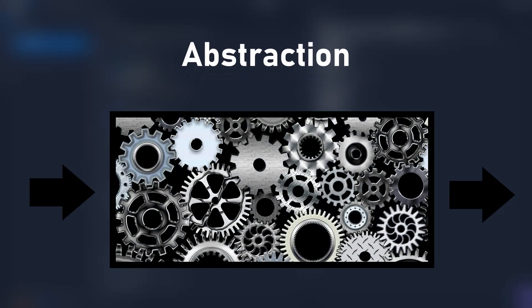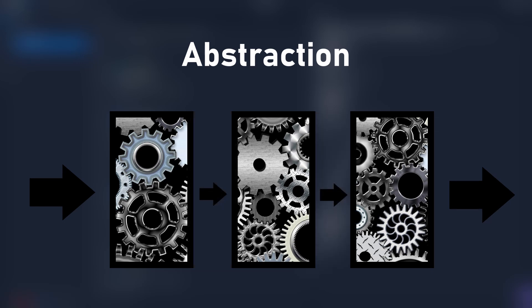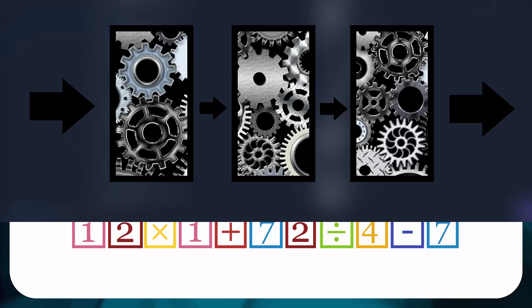Basically, the key to making it work was abstraction. Abstraction is a computer programming term which basically means breaking a large task into several smaller steps so that you can create simpler functions for each task. That way you can do each part individually without worrying about the whole big picture all at once.